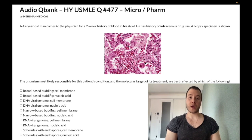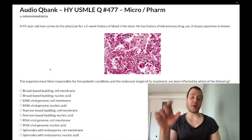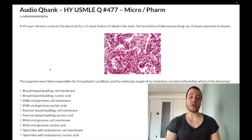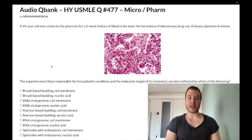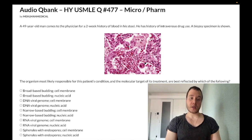Choices A and B show broad-based budding — immediately wrong. These refer to blastomycosis, a fungal infection that can occur in wooded areas like the Ohio and Mississippi River Valley. On offline NBME material, they'll give you a long paragraph about a patient with a papule on the nose, and mention broad-based budding at the end. It's just blastomycosis — that simple. Wrong answers.